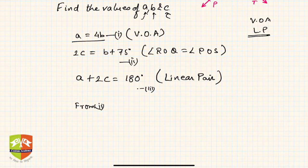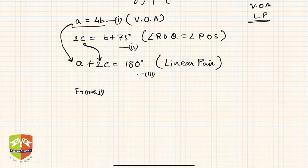Let's deploy a from here and c into this equation and then we'll get one equation in b. If you see in equation number three, I can deploy the values of a and 2c. From equation one, 4b plus 2c is nothing but b plus 75.